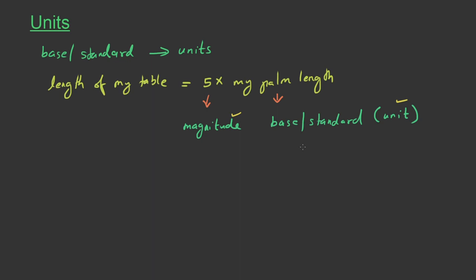In this example, if I measure my palm length with my palm itself, then it will surely be 1 times my palm length. So in other words, if I measure the standard, it is exactly 1 unit of the quantity.